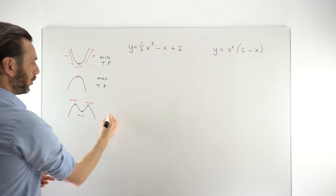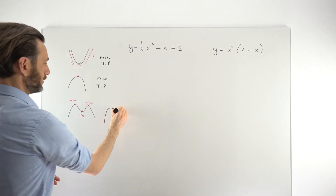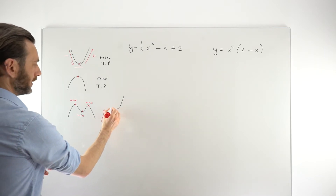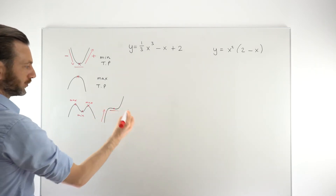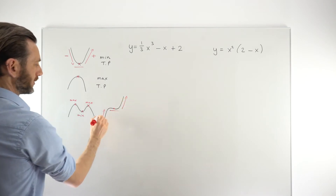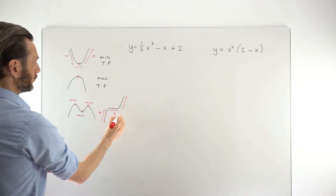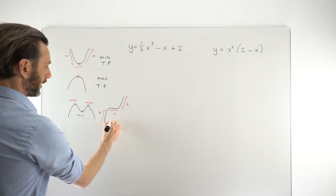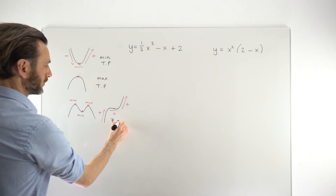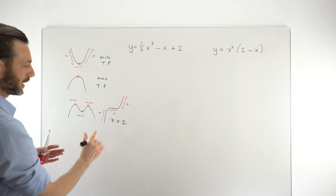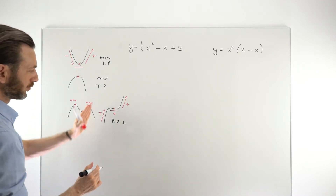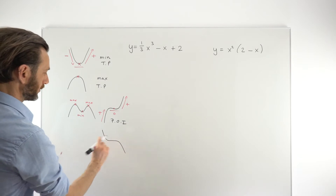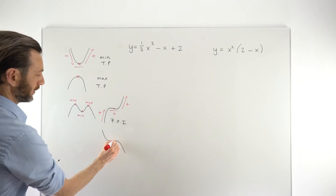The other option is a point of inflection, where the graph is increasing, then stops and goes horizontal at that point, and then increases again — so positive gradient, zero, then positive again. That one is called a rising point of inflection. You also get a falling point of inflection, which works the opposite way.